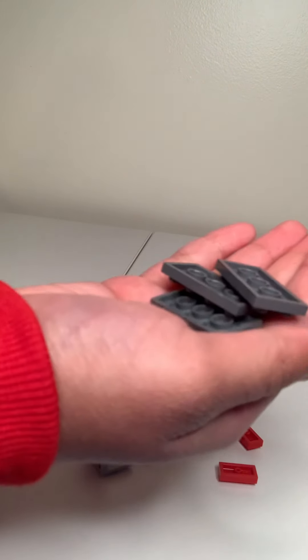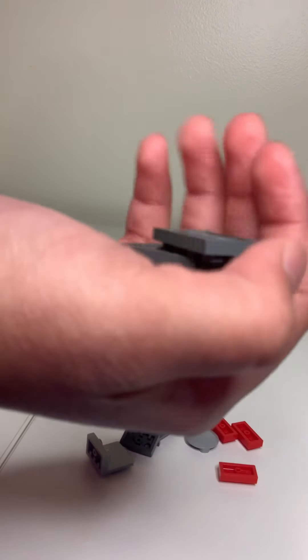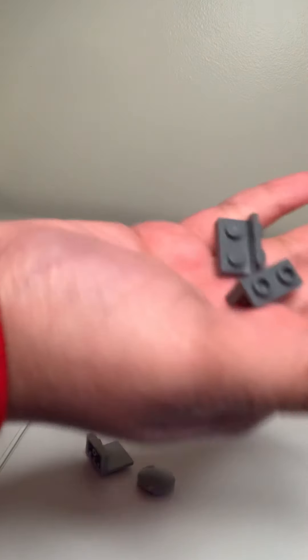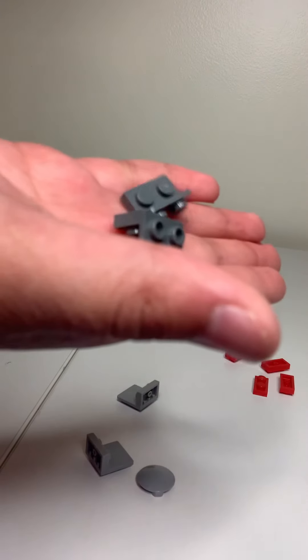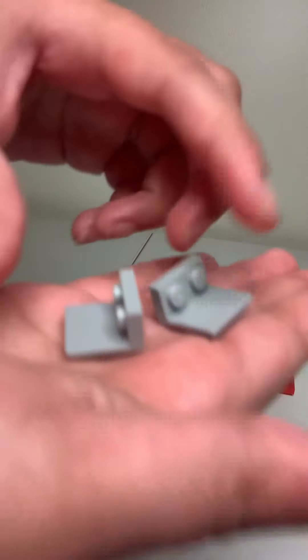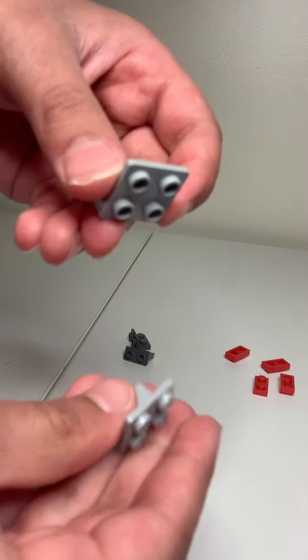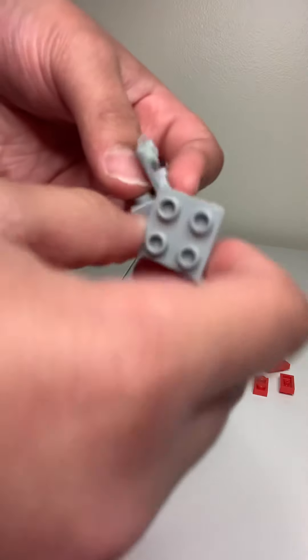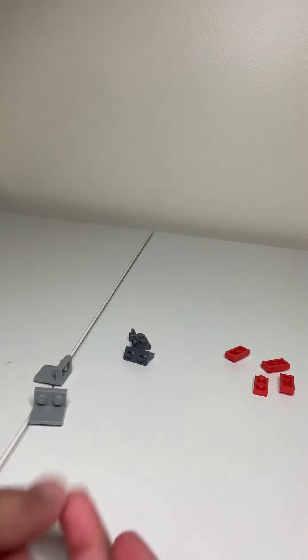All right, so here we go. You need three dark red two by fours. You need four one by twos in red. You need two one by twos in dark gray. And then after that you need the hover trick thing, which is right here, which I'll show you the hover trick soon.